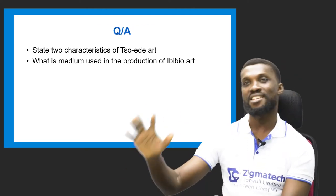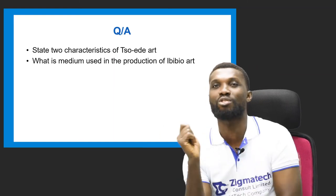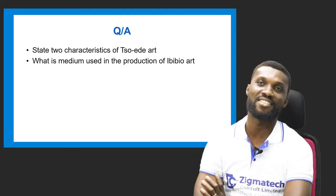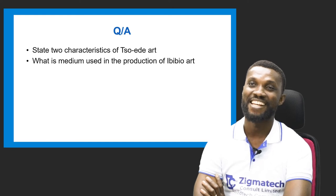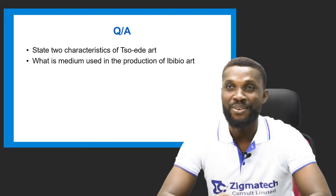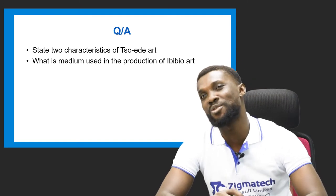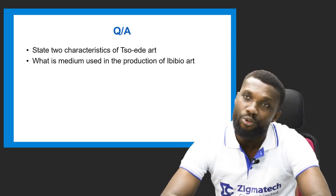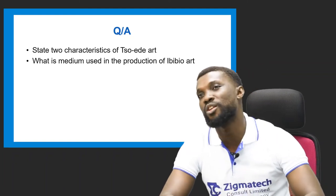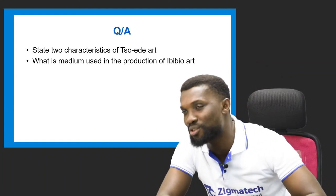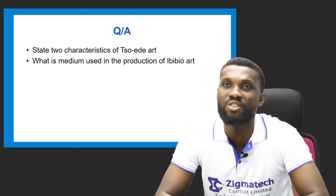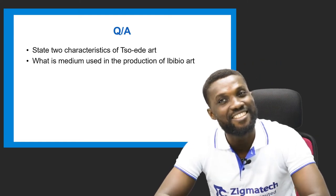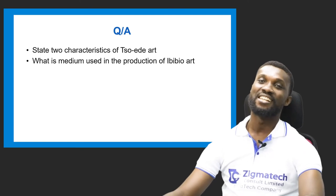Now let's answer some questions — Q&A time. State two characteristic features of Tsoede art. What is the medium used in the production of Ibibio art? The Ibibio people — I explained where they came from, how they originated, with Calabar and Akwa Ibom sharing common boundaries with Rivers State. The medium used by the Ibibio is wood carving — that's very correct.